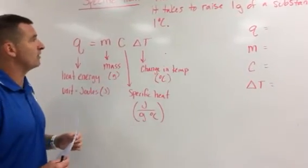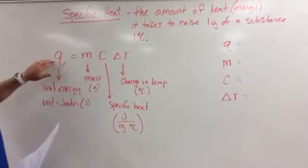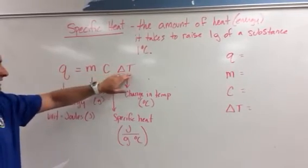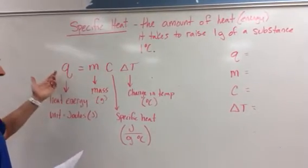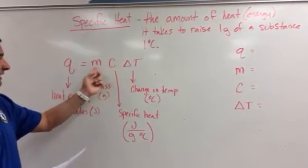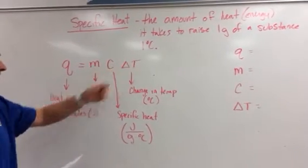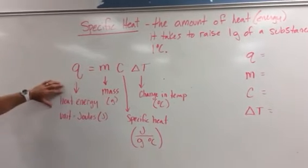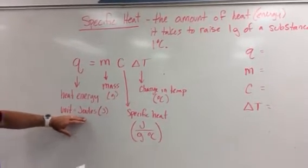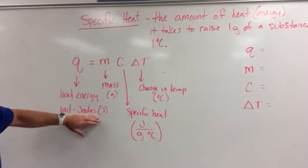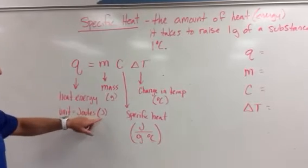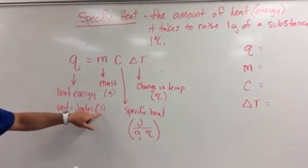The formula we're going to use for that is Q equals MC delta T, which we usually call Q equals MCAT to remember it — so MC delta T looks like 'cat'. Q is the heat energy, and the unit is going to be in joules — J-O-U-L-E-S. We're talking about energy joules, and the abbreviation for that is a capital J.